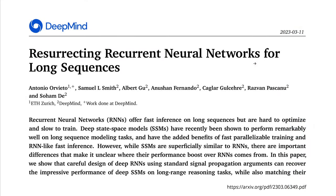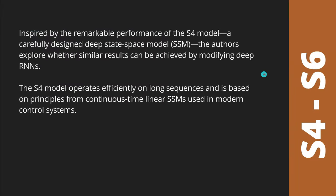Exactly a year ago, Google DeepMind said: we resurrect now those old recurrent neural networks for long sequences. They had the idea to look at the deep state space models — S4 models, S5 models, and later S6, the Mamba models — and ask: what can we learn from them and implement it in the recurrent neural network? We kind of put a warp drive on our old model.